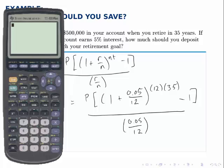On the calculator, I'll start with the innermost parenthesis. 1 plus 0.05 divided by 12, raise that answer to the power of 12 times 35, subtract 1, and that represents everything in brackets.